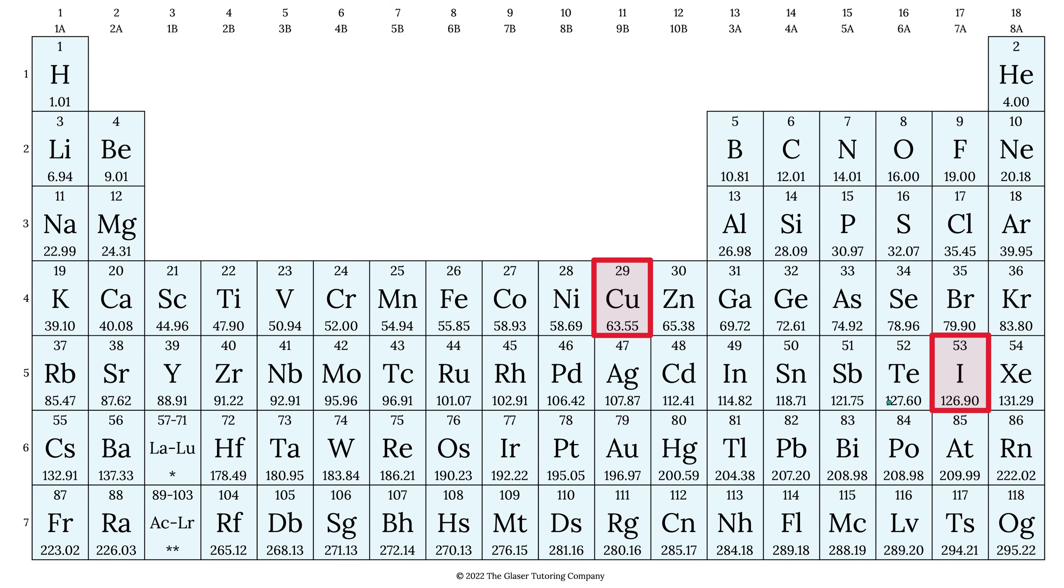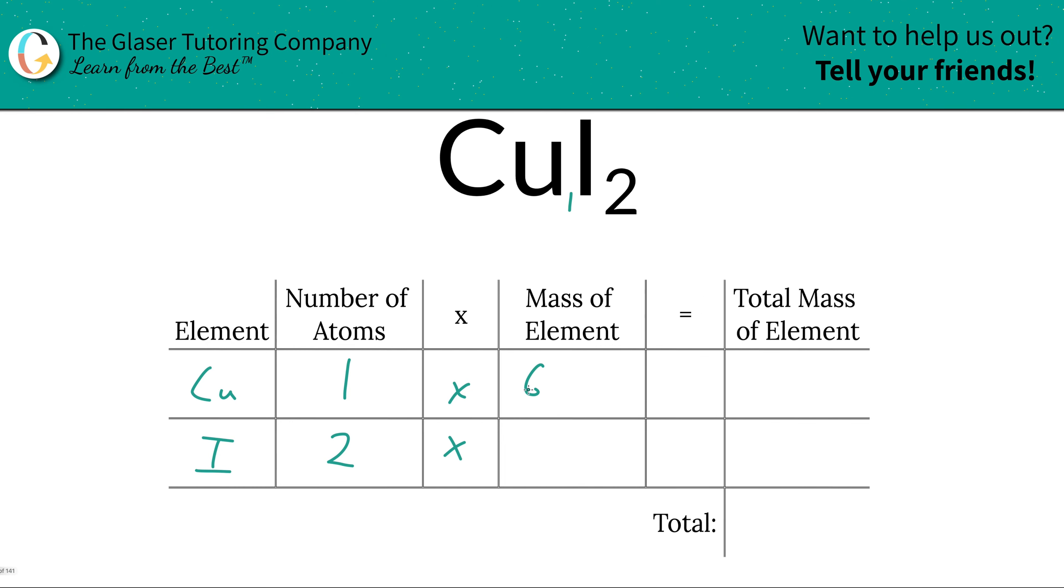So here are the masses of both copper and iodine. And I'm now going to write them down. So 63.55 for copper, and then iodine is about 126.90.